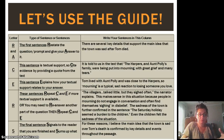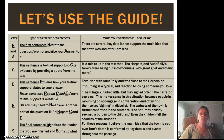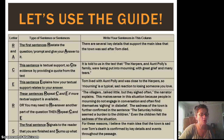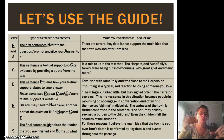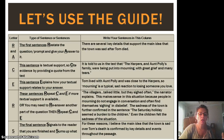We already found that information, now we're using it. Then we explain that citation: 'Tom lives with Aunt Polly and was close to the Harpers, so mourning is a typical sad reaction to losing someone you love.' This particular question required only one answer with several pieces of support — it was only a one-part question. So we're simply going to repeat C and E to provide more textual support: 'The villagers talked little, but they sighed often, the narrator explains. This makes sense because people in mourning do not engage in conversation and often find themselves sighing in disbelief.'